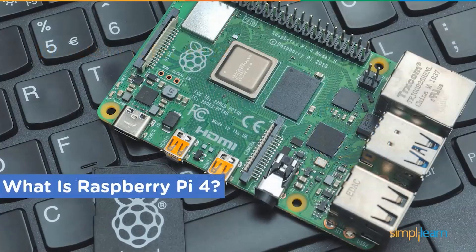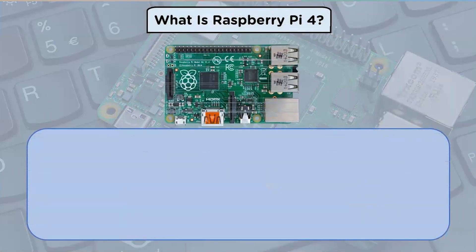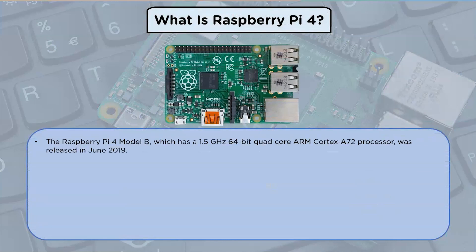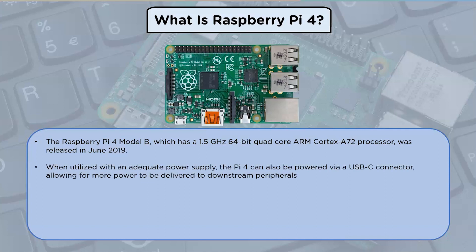What is Raspberry Pi 4? The Raspberry Pi 4 Model B features a 1.5 GHz 64-bit quad-core ARM Cortex-A72 processor, released in June 2019. When utilized with an adequate power supply, the Pi 4 can also be powered using a USB-C connector, allowing for more power to be delivered to downstream peripherals.